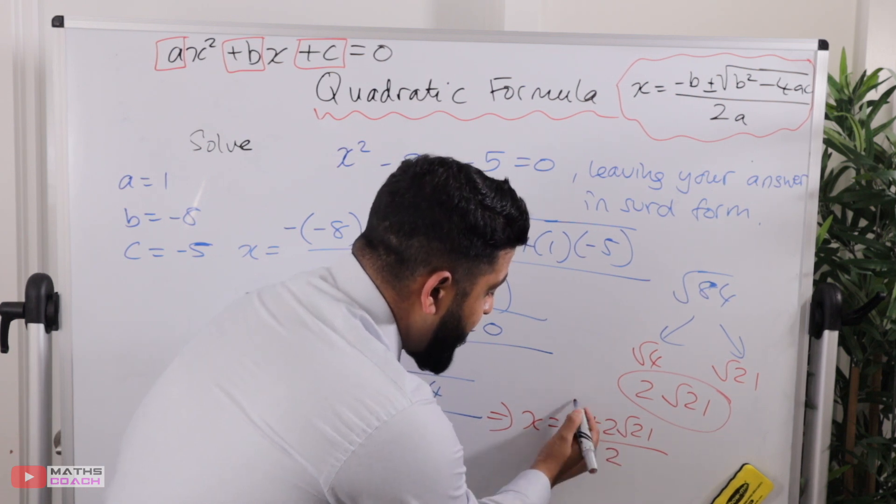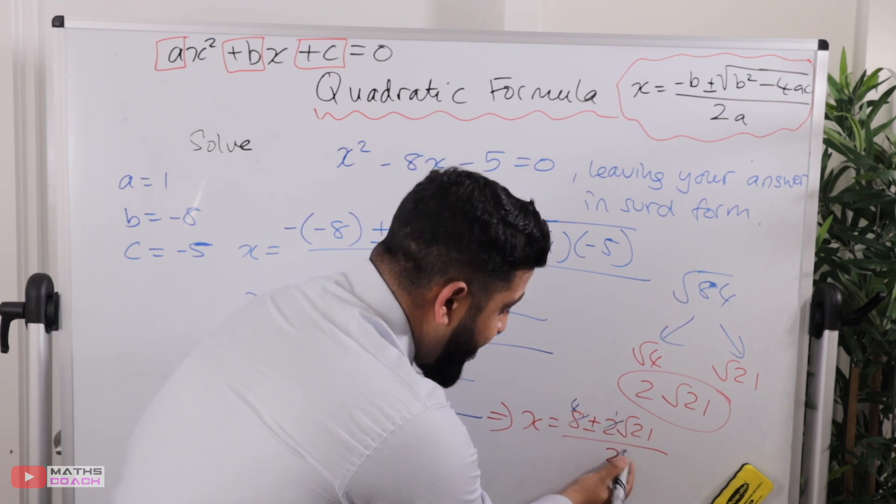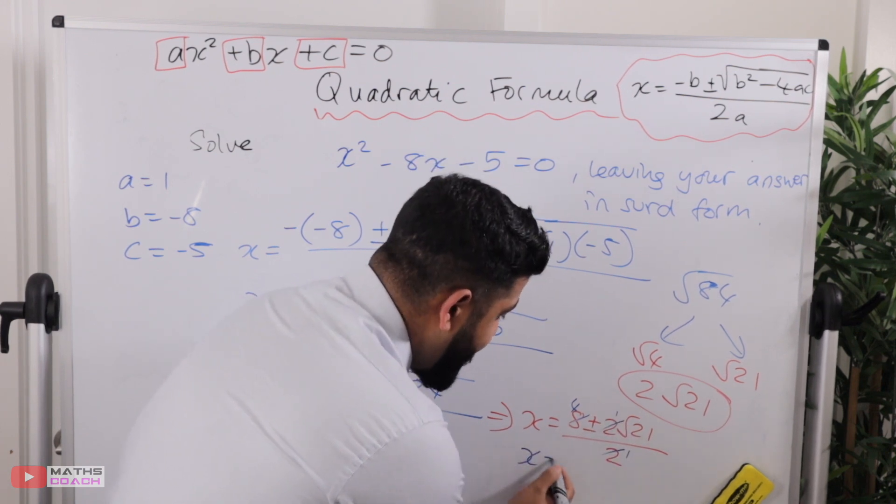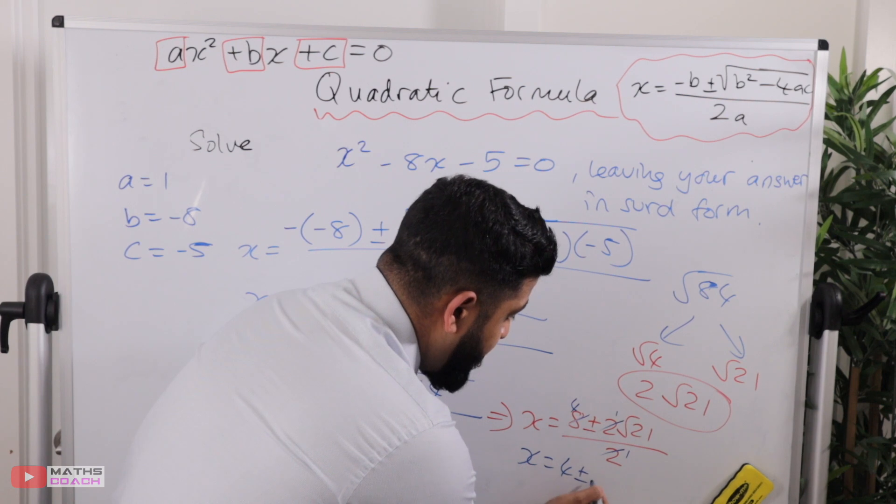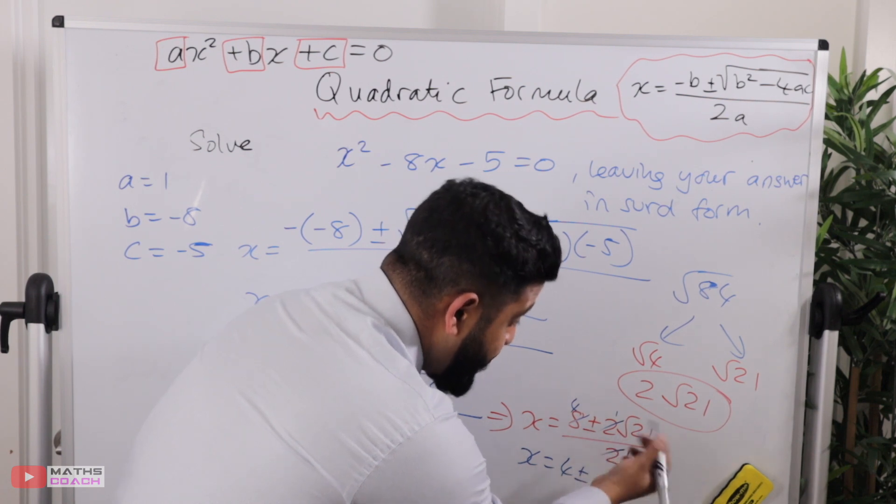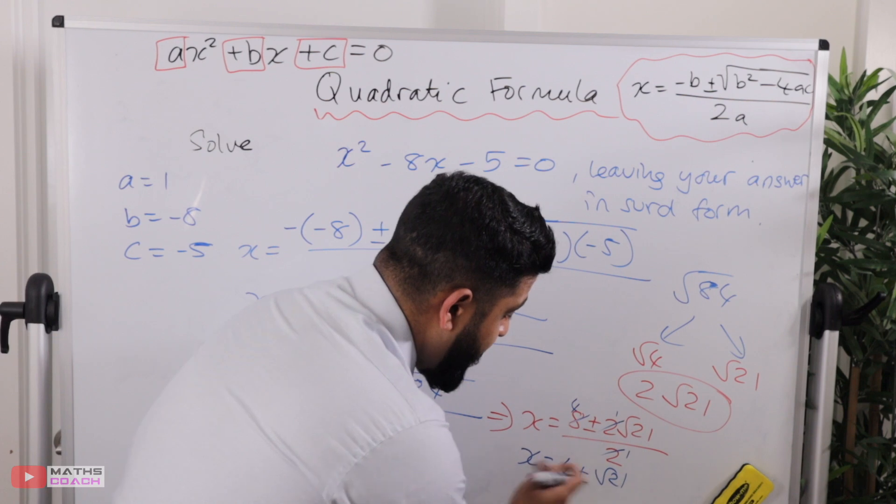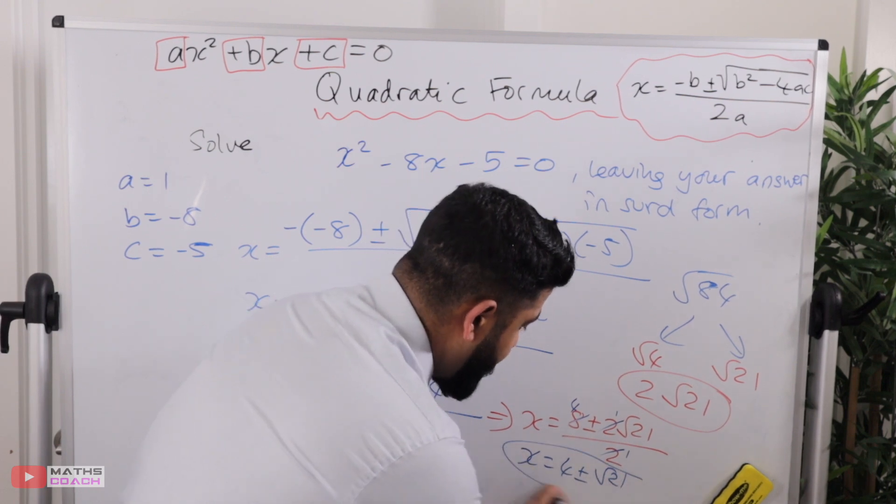When I divide this by 2, I get 4, that divided by 2 is 1, that divided by 2 is 1. Overall, it leaves me with 4 plus or minus 1 root 21, I don't need to write the 1 here, so just root 21 all over 1, which I also don't need to write.